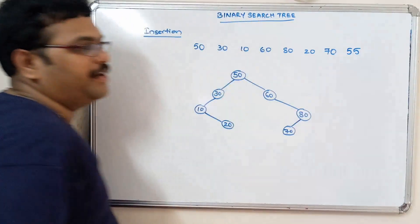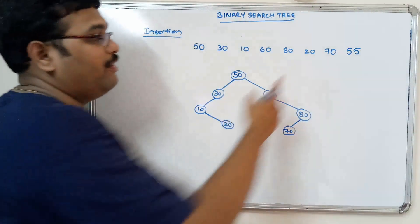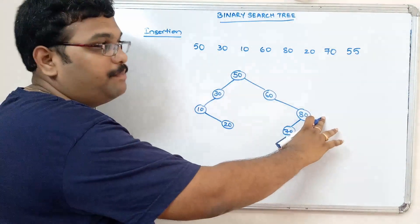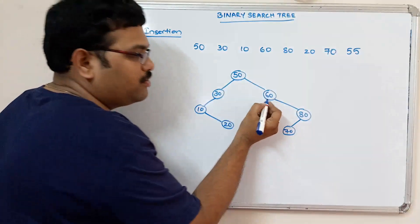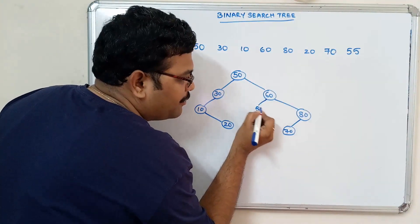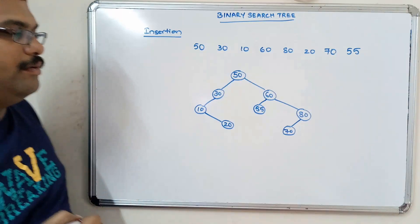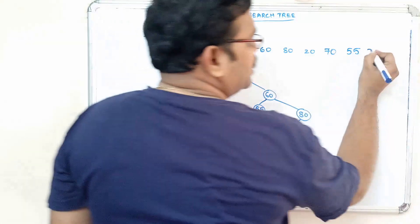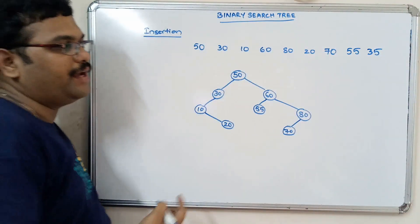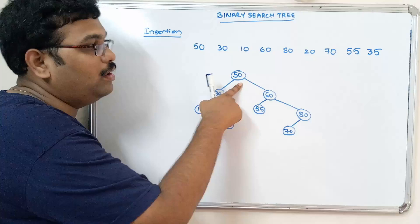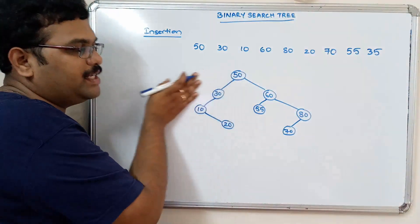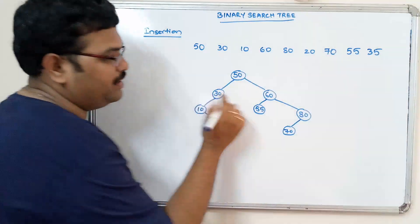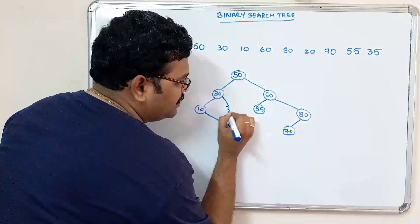If we insert 55: 55 is greater than 50, so right subtree; and 55 is less than 60, so it is inserted to the left of 60. If we insert 35: 35 is less than 50, so left subtree; and 35 is greater than 30, so it should be placed in the right subtree of 30.